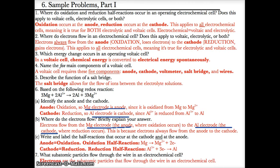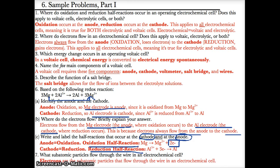For the half reactions: at the cathode, you do reduction (red cat), and at the anode, you do oxidation (anox). The oxidation half reaction is Mg → Mg²⁺ + 2e⁻. The reduction half reaction is Al³⁺ + 3e⁻ → Al⁰.